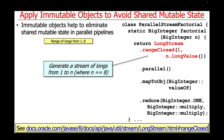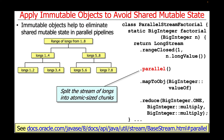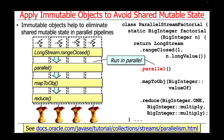The first step in the factorial method implementation generates a stream of longs from 1 to n using the LongStream.rangeClosed factory method. We choose a value of n equal to 8 so we can visualize how the program behaves. We next call the parallel operation, which converts the sequential stream into a parallel stream. This has the effect of splitting the stream of longs into atomic-sized chunks — first into two chunks from 1 to 4 and 5 to 8, then into chunks of 1 to 2, 3 to 4, 5 to 6, 7 to 8, and so on, until the chunks become atomic-sized and can't be split any further. The parallel operation also arranges to run these chunks using the common fork-join pool, which has a pool of threads mapped to the underlying processor cores, so all computations run in parallel.